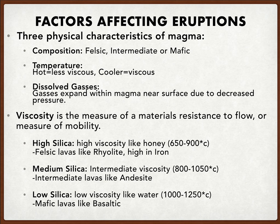Moving into composition, we have three primary families — we have a fourth one which is considered ultramafic, but that's not as important for this course. The three that we'll be really focusing on will be felsic, intermediate, or mafic.